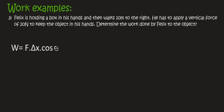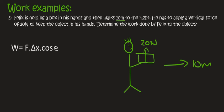Here's the last example for this lesson. We have a person called Felix, who's holding a box in his hands, and then walks 10 meters to the right. He has to apply a vertical force of 20 Newton to keep the object in his hands. Because obviously, if he lets it go, it's going to drop due to gravity. Determine the work done by Felix to the object.